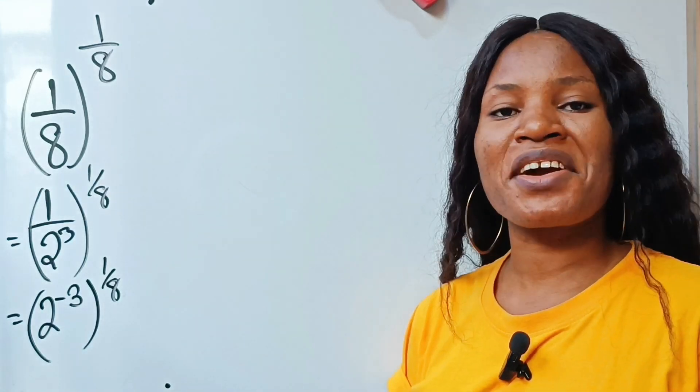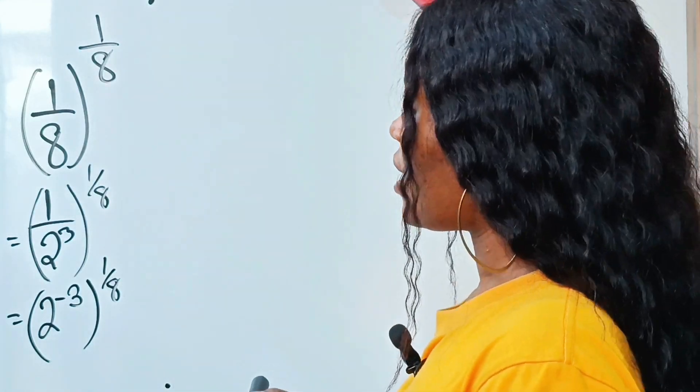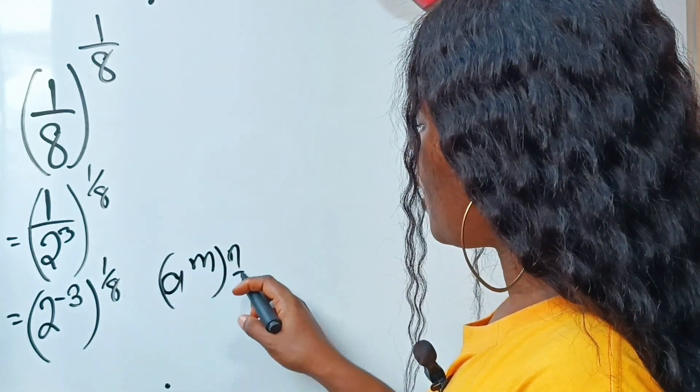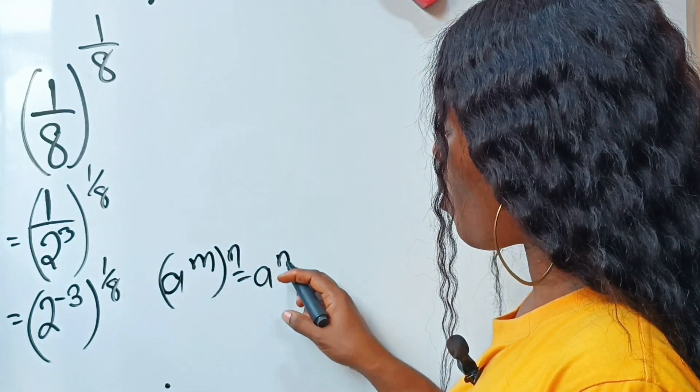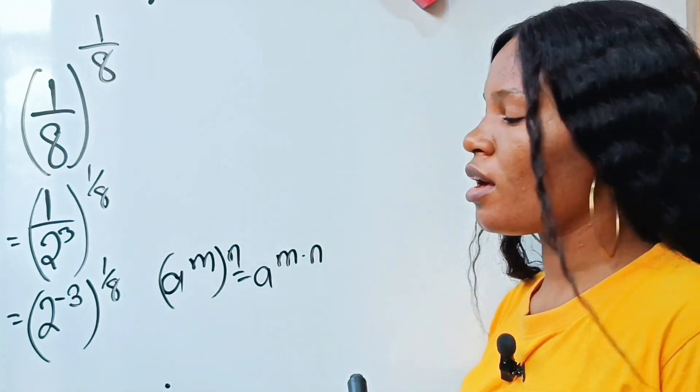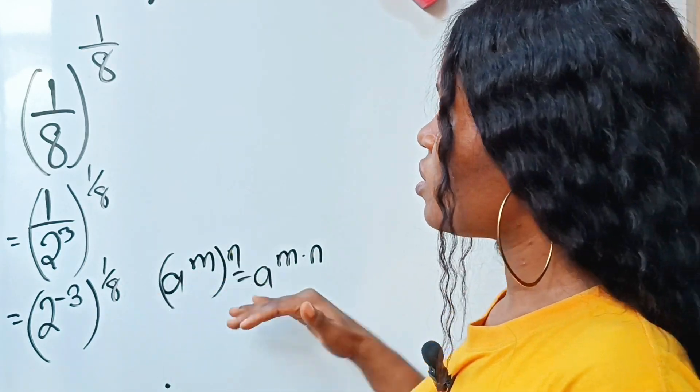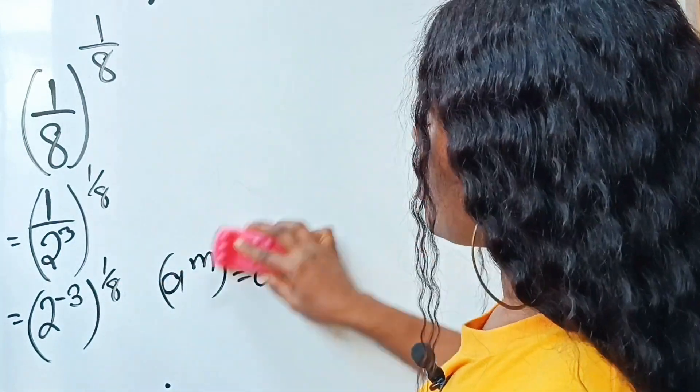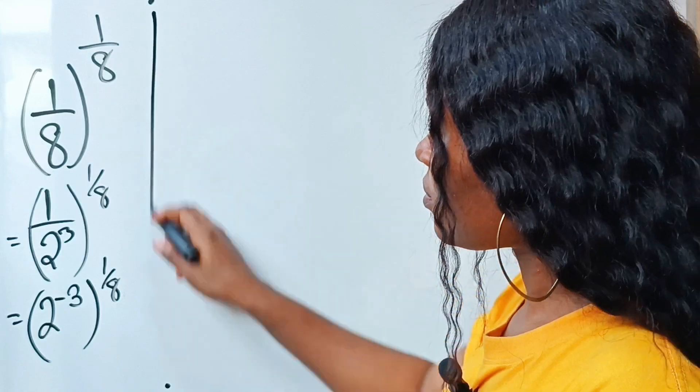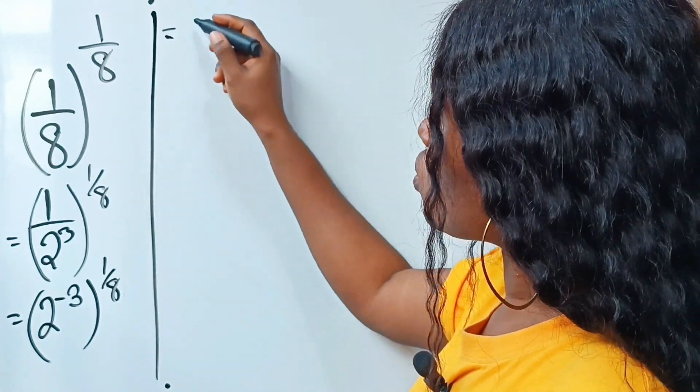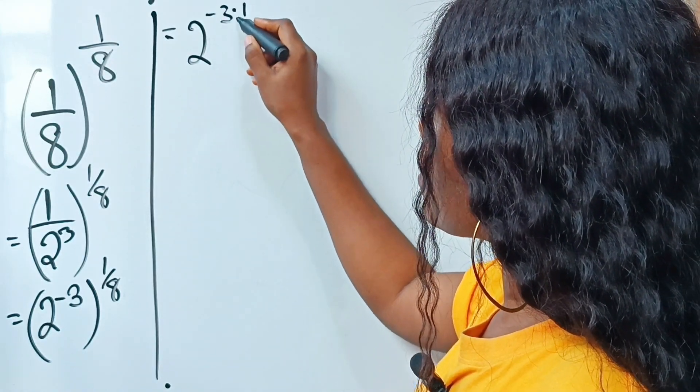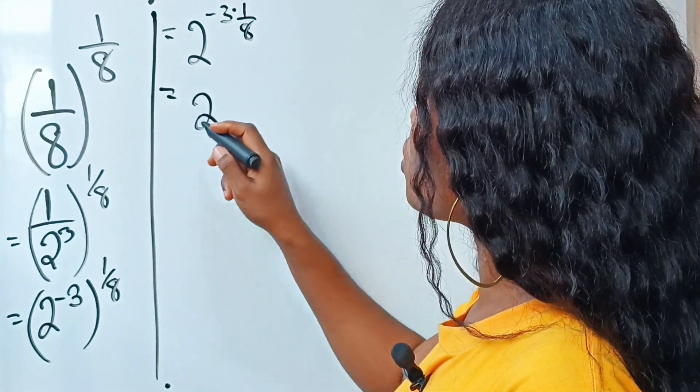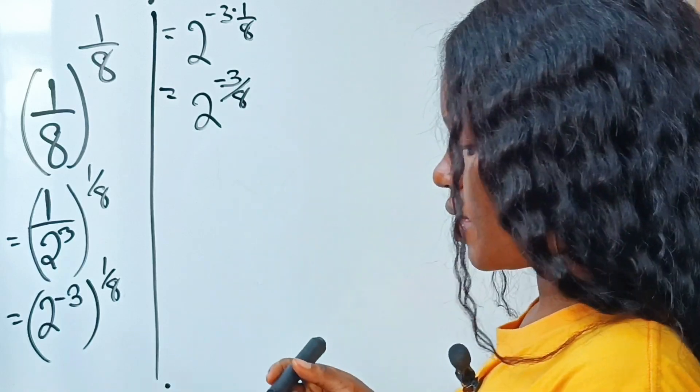I want us to recall this law of exponents that states that a to the power of m raised to the power of n is equal to a to the power of m multiplied by n. So if we should do the same thing here, we are going to get 2 to the power of minus 3 times 1 over 8, which is equal to 2 to the power of minus 3 over 8.